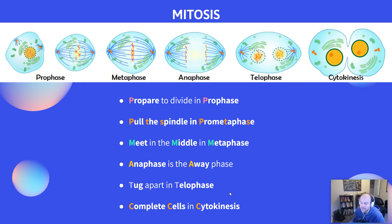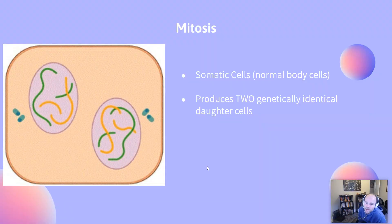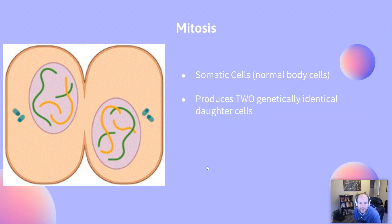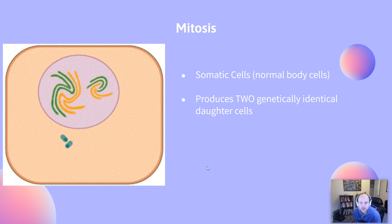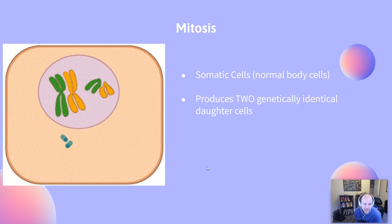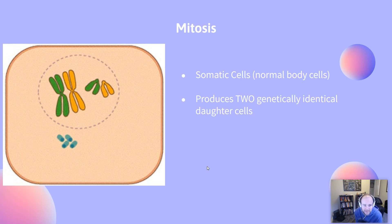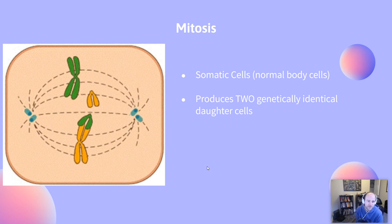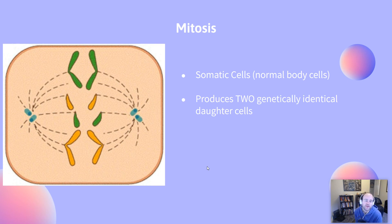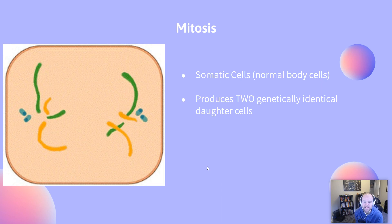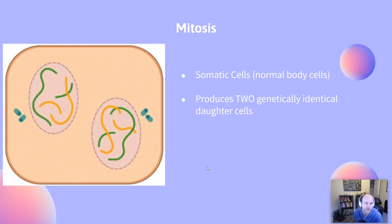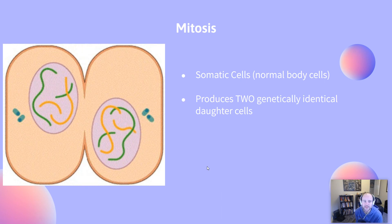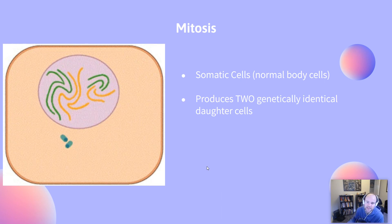That little bit of alliteration always helps me remember things. As a reminder, mitosis is only happening in our somatic cells and it's going to produce two genetically identical daughter cells. As we watch in this animation, those homologous chromosomes get replicated. In prophase they form chromosomes, we meet in the middle in metaphase, spindle fibers contract to pull apart the chromosomes in anaphase, in telophase two new cells form with the nuclei, and then in cytokinesis we have that cleavage event.